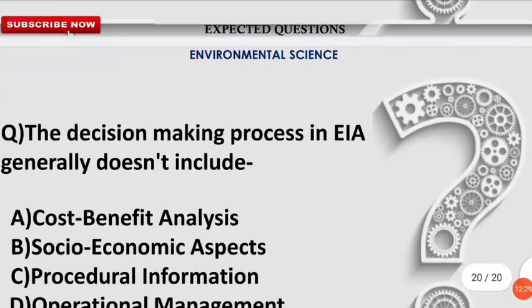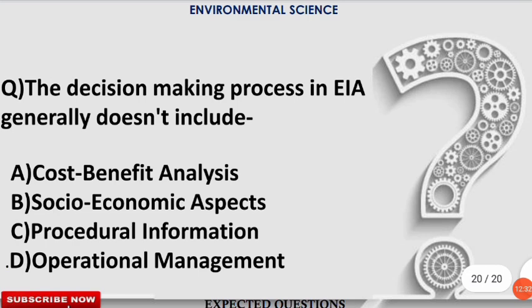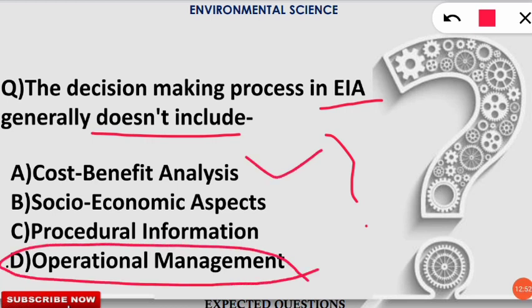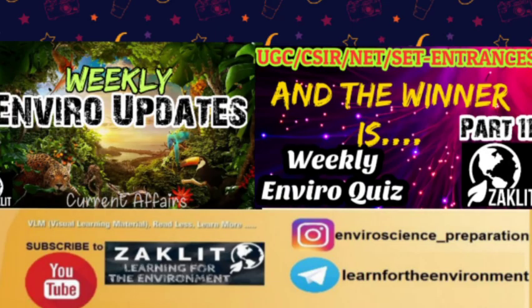The next question: the decision-making process in Environmental Impact Assessment generally does not include which of the following? The correct answer is option D — Operational Management is not included in the EIA decision-making process. Cost-benefit analysis, socioeconomic aspects, and procedural information are all included, but operational management is not.